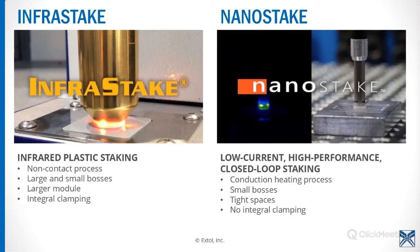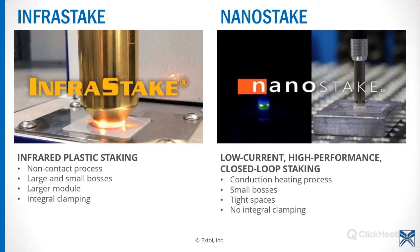Nanostake, on the other hand, is not infrared. It is a low-current, high-performance, closed-loop staking process that uses conduction rather than infrared. It was specifically designed with small bosses in mind that are in really tight places. The physical size of this module is just much smaller than Infrastake. It works really well in small parts. However, it does not offer the integral clamping that Infrastake does.